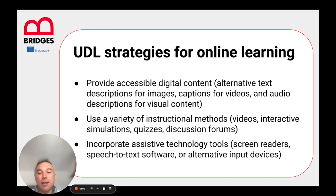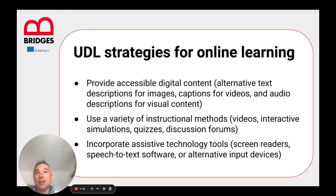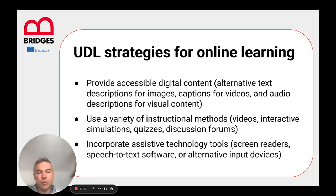Specifically for online learning, there are some strategies we can also deploy. The main thing we always have to think about online is to provide accessible digital content and follow the main good practices for digital accessibility — for example, alternative text descriptions for images, not only written but also audio descriptions for visual content. And for the videos we produce, it is important and very good practice that they all have captions, subtitles, and that transcripts are available for those videos.